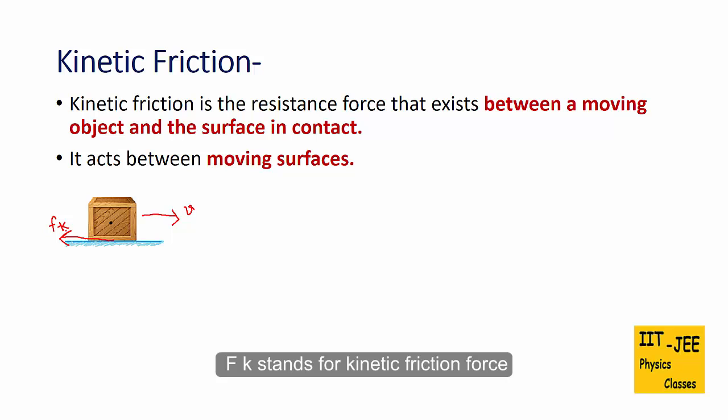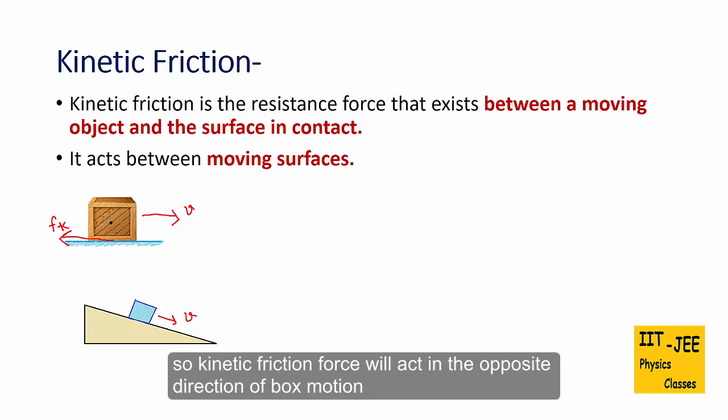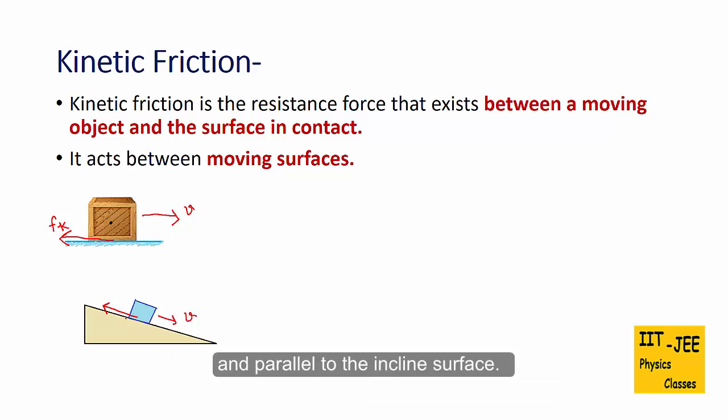Fk stands for kinetic friction force. The same way this box is moving down the incline with some speed V. So kinetic friction force will act in the opposite direction of box motion and parallel to the inclined surface.